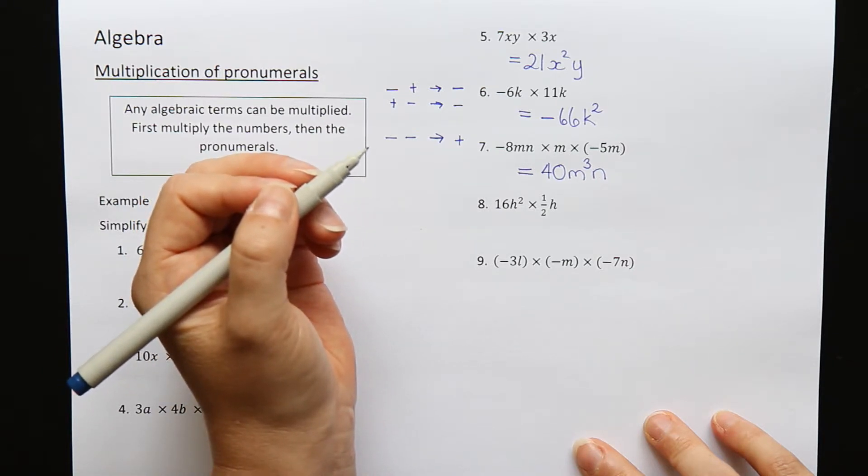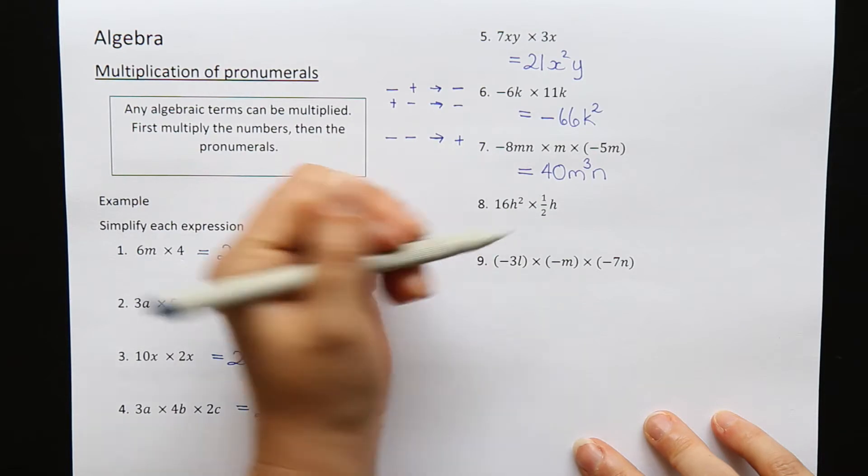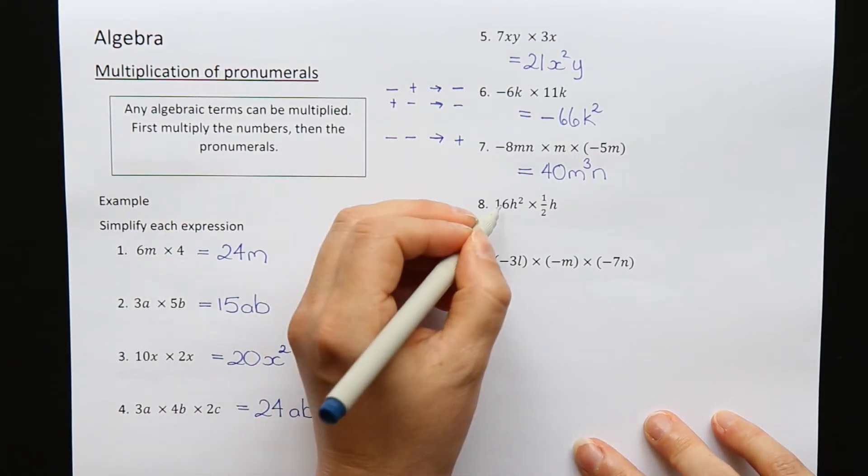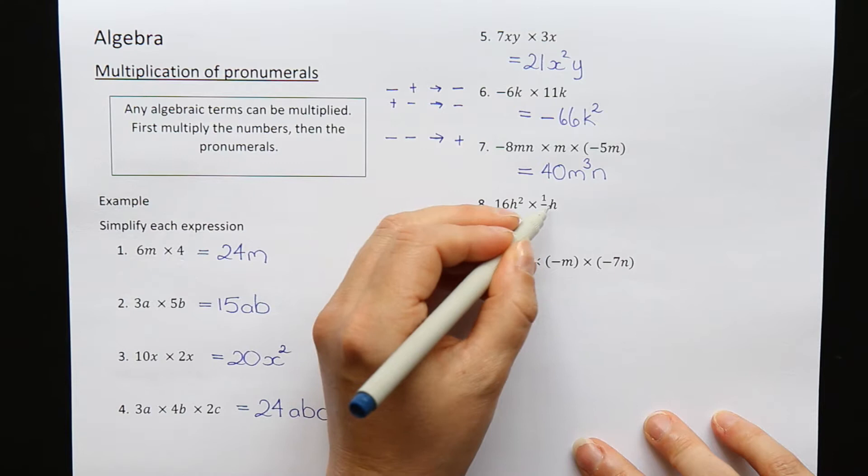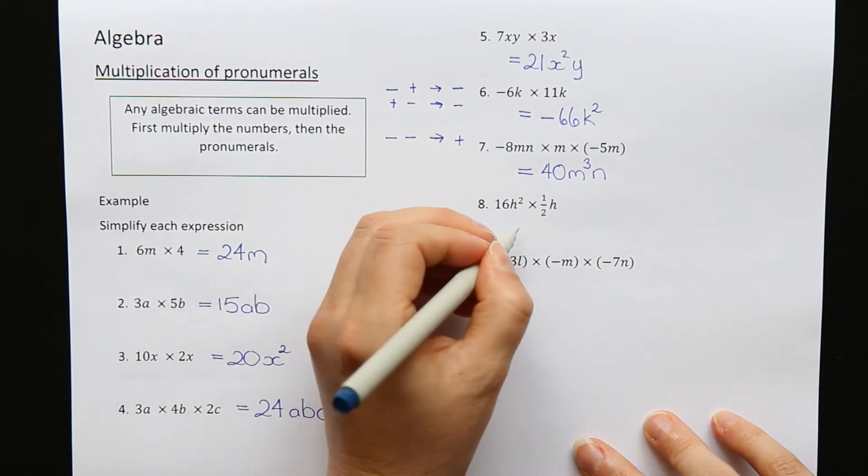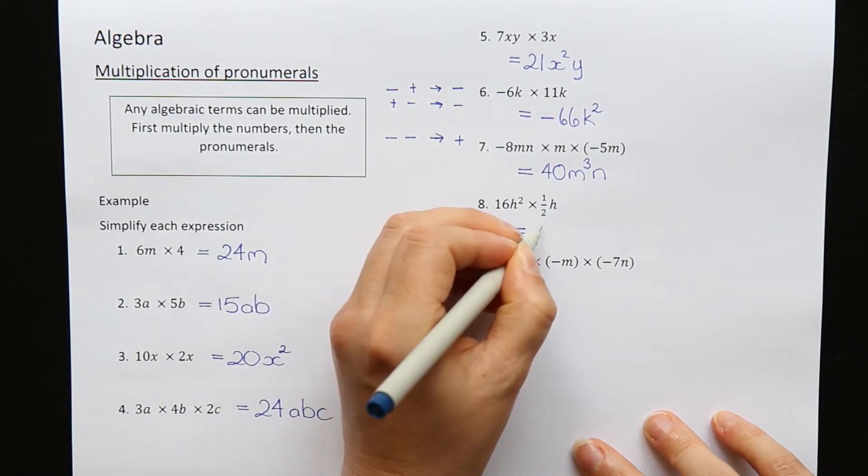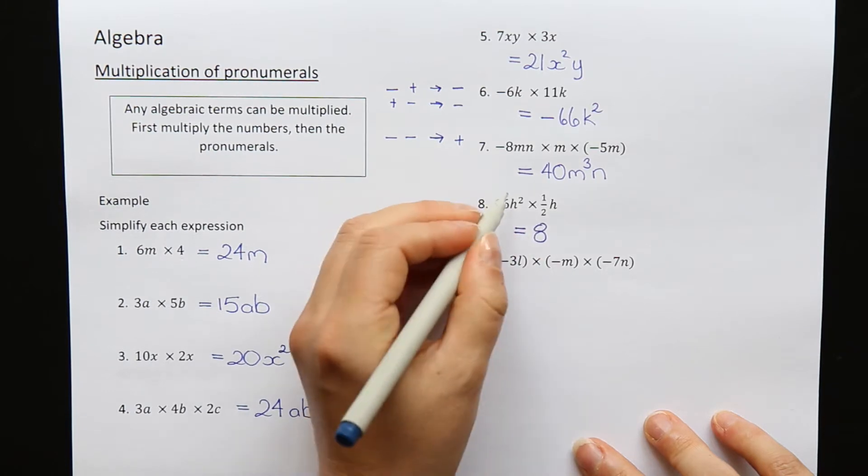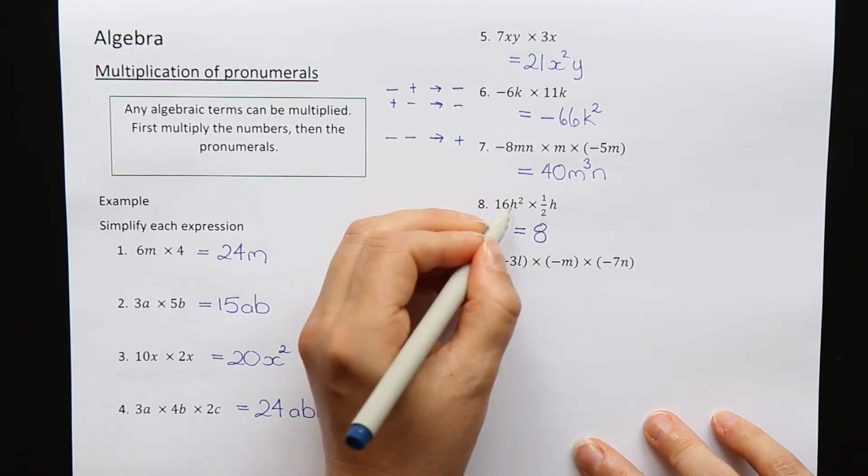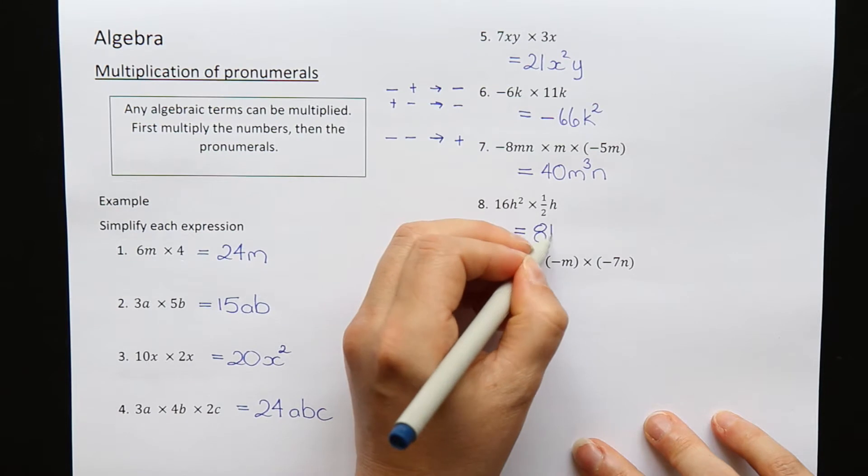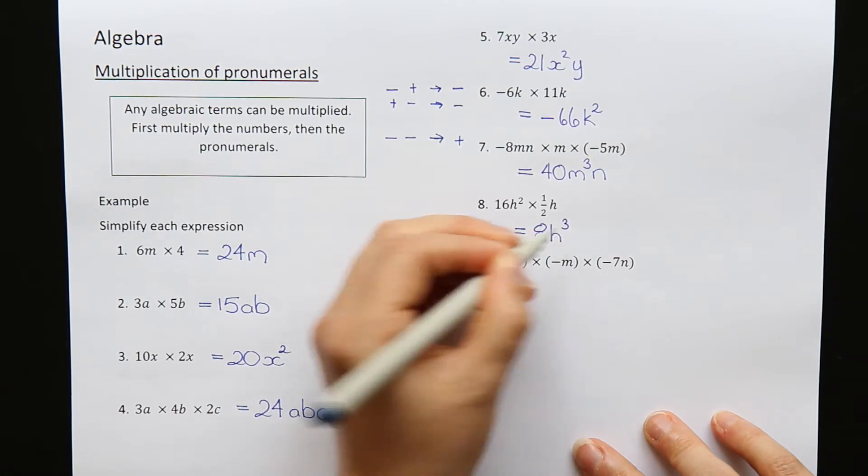Question 8: We can even do this with fractions. First multiply the numbers—16 times a half, which is half of 16. Half of 16 is 8. h squared times another h, well there was two and another one, so that's going to become h cubed.